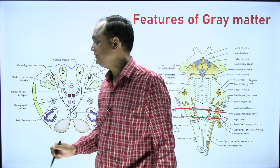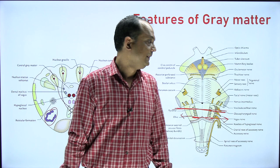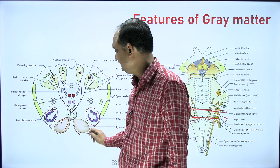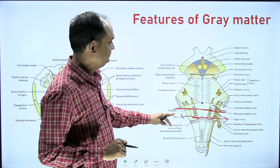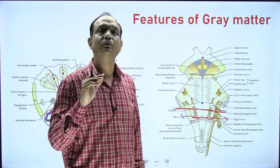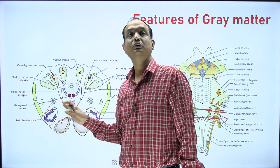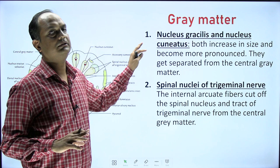In some books, the olive may not be shown in this section. The most prominent feature is the crossing of the internal arcuate fibers forming the medial lemniscus. Another important feature you must draw is the pyramids, which occupy the ventral surface of the brain stem. You also have exit points of the lower four cranial nerves — 9, 10, 11, and 12 — so you must draw the nuclei of these four cranial nerves.